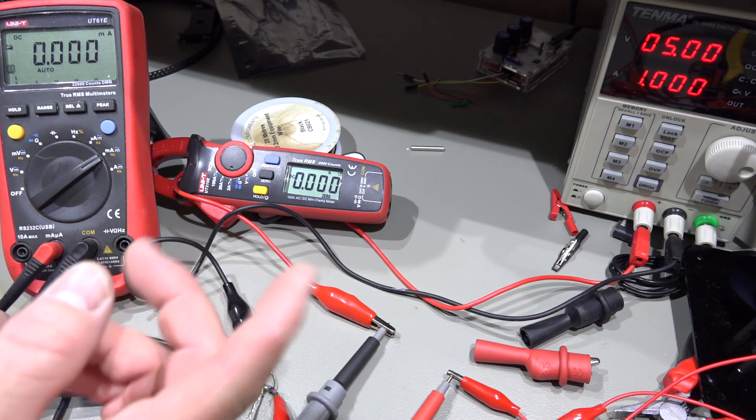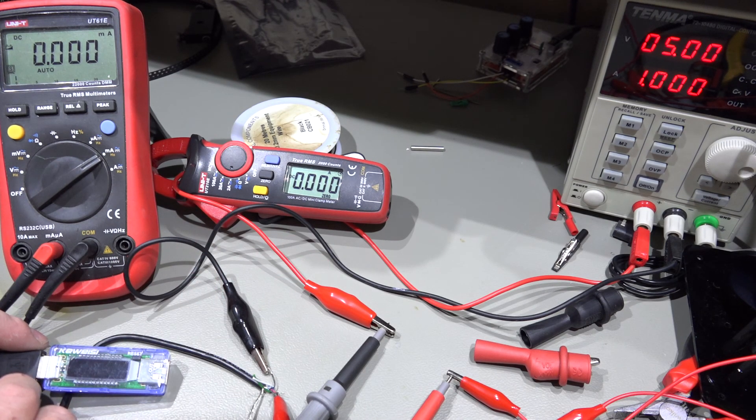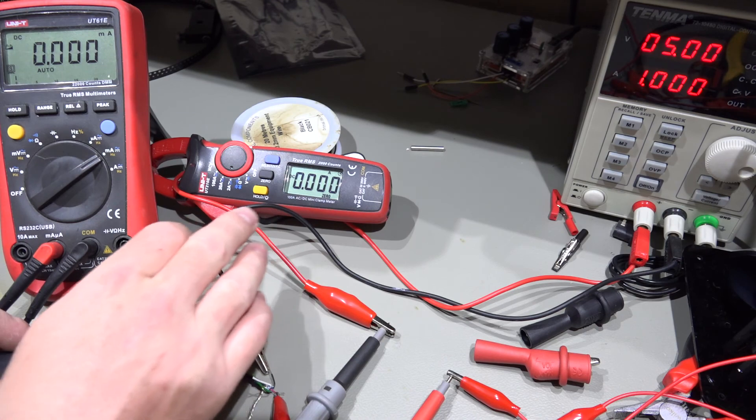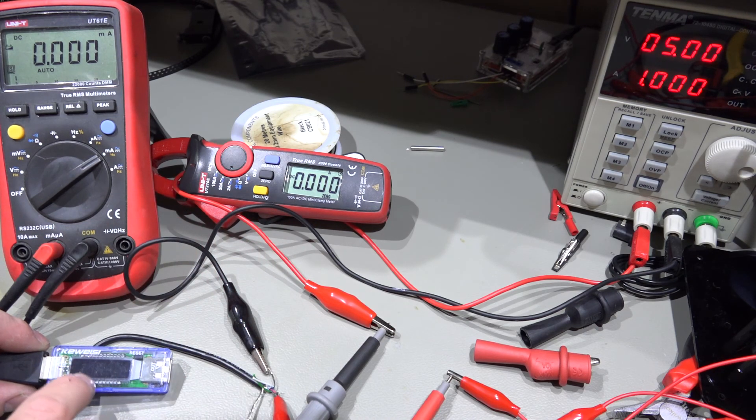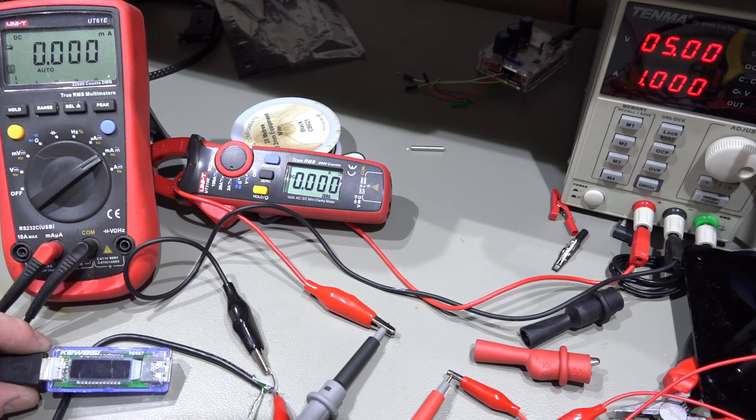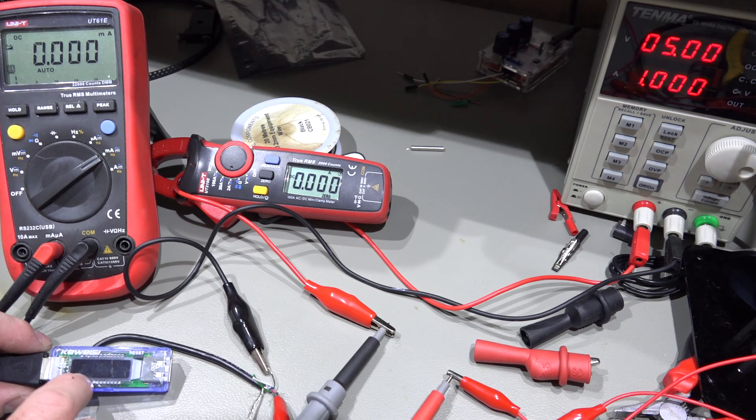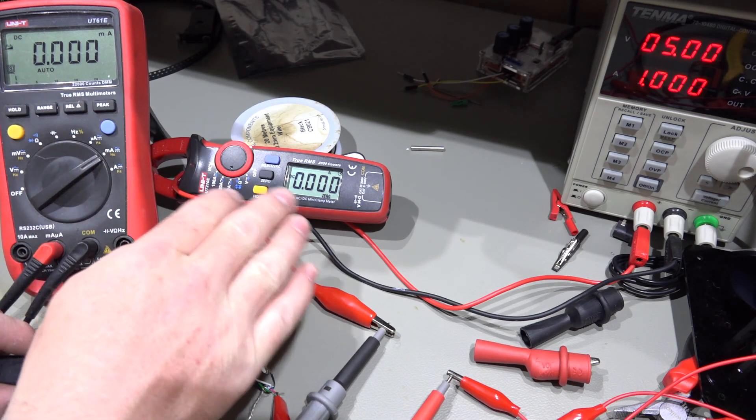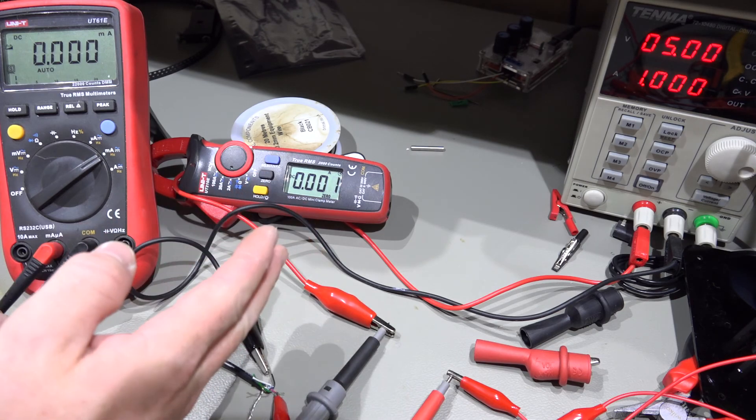I've got the power supply currently set at 5 volts, 1 amp. I'll need to boost the current if we want to test it above 1 amp. I've got a DC clamp meter here, for those that want to know it's a UNI-T UT210E and I've got my UNI-T UT61E multimeter as well. That's currently set on milliamp range.